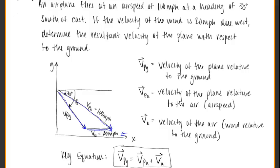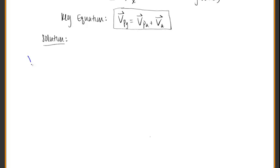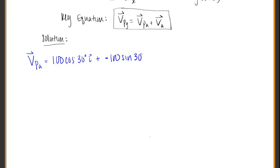Let's take this information and find our vectors in each of their components. The velocity of the plane relative to the air is 100 times the cosine of 30 degrees times the i unit vector, and since the plane is pointed down — going south of east — we write it as negative 100 times the sine of 30 degrees times j. Filling this in, VPA equals 50 square roots of 3 times i minus 50 times j miles per hour.